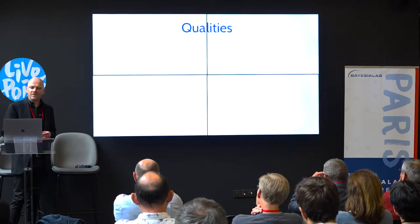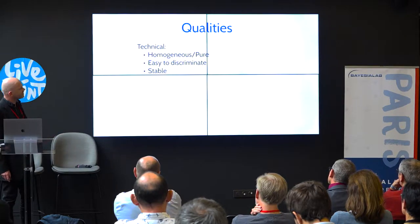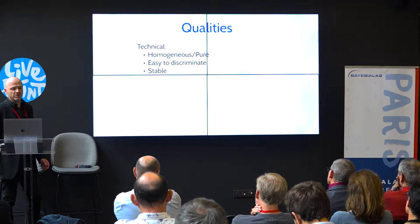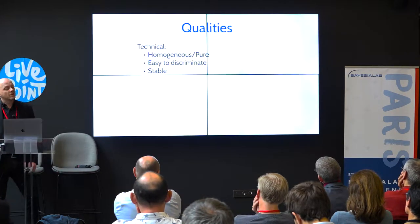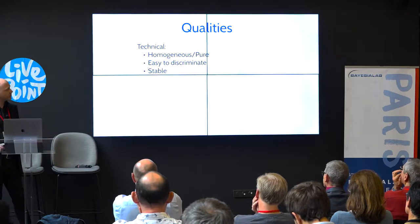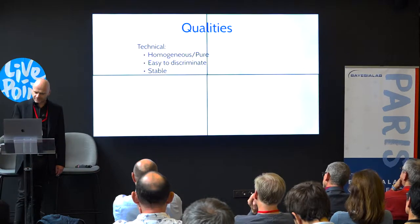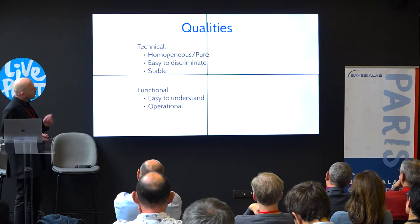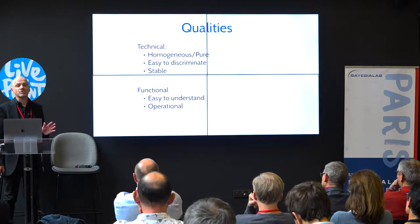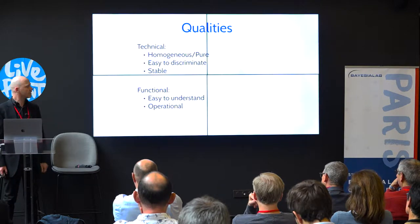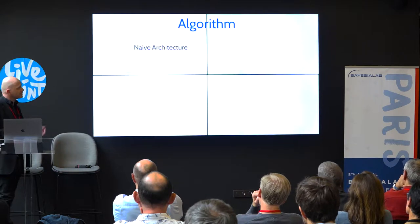When we are doing data clustering, we need to find a way to evaluate the quality of the clusters. We have some technical quality criteria, like the homogeneity or purity of the cluster. We also need clusters that are easy to discriminate — clear differences between them — and we need stable solutions. From a functional point of view, the clusters have to be easy to understand and operational.